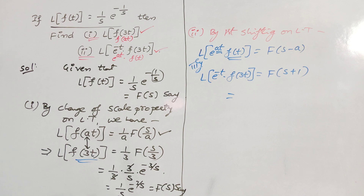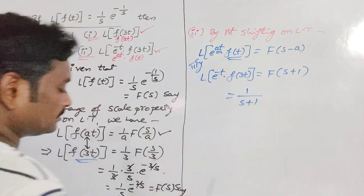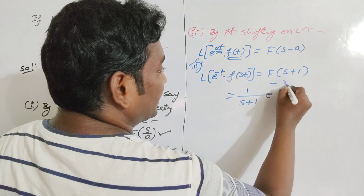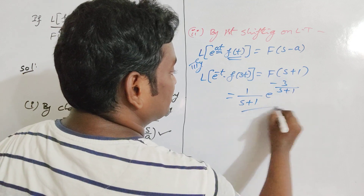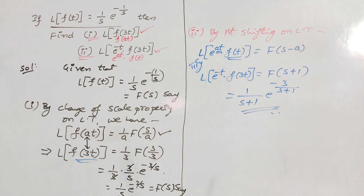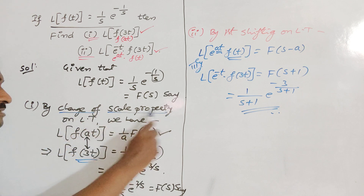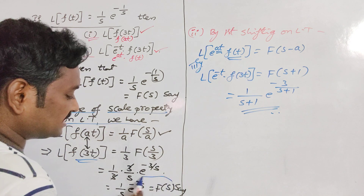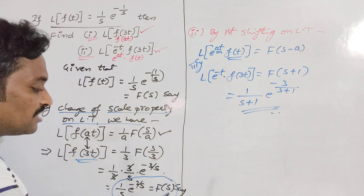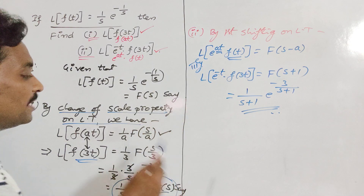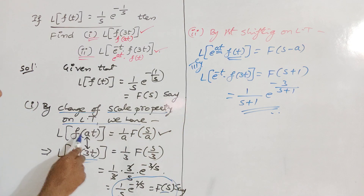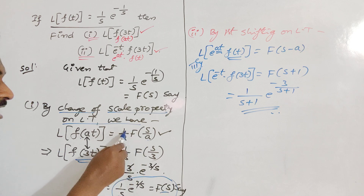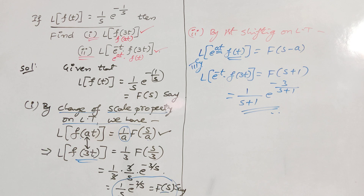In this F of s, wherever we have s we replace it by s plus 1, giving 1 by (s plus 1) times e to the power minus 3 by (s plus 1). This Change of Scale Property is similar to the First Shifting Theorem: in the First Shifting Theorem, s in F of s is replaced by s minus a, whereas in the Change of Scale Property, s is replaced by s by a and we multiply by 1 by a. Thank you very much. In the next video I will give more examples on transformations.